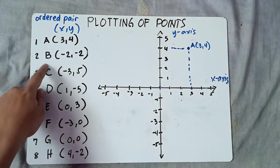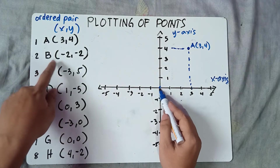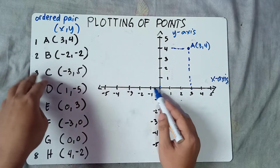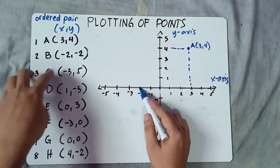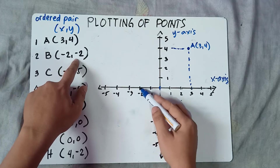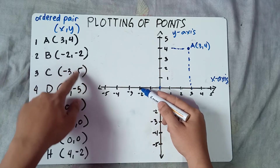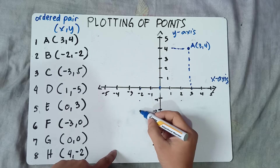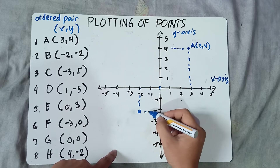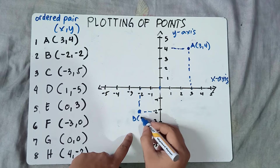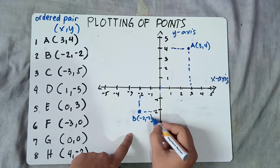Let's try B. Starting from the origin, x is negative 2, so you move 2 units to the left — 1, 2. And y is negative 2, so you move 2 units downwards — 1, 2. So B equals (-2, -2).